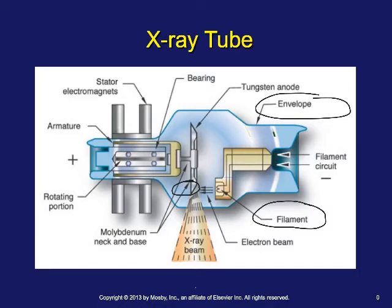The electrons are accelerated across the space from the cathode to the anode because of the potential difference between the negative and positive charge. They jump and accelerate very quickly across the vacuum, slam into the anode target, and in the process produce x-rays as well as a whole lot of heat. Most of what the x-ray tube produces is heat, infrared light, and visible light — the anode will literally start to glow white hot, which is one reason why we rotate it rapidly.